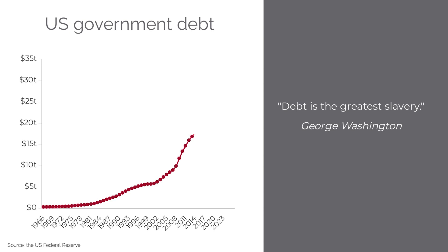Over the next 224 years, from 1790 to 2014, that debt totaled 17 and a half trillion dollars. That's 224 years. Over the next 10 years only — from 2014 to 2024 — that U.S. debt doubled by another 17 and a half trillion to 35 trillion dollars.